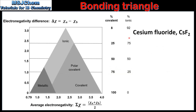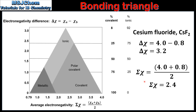The next example is Cesium Fluoride. The difference in Electronegativity between Cesium and Fluorine is 3.2, and the average Electronegativity is 2.4. Plotting 3.2 on the Y axis and 2.4 on the X axis puts us firmly in the Ionic region of the Bonding Triangle. The bonding in Cesium Fluoride is Ionic, with a low percentage Covalent Character and a high percentage Ionic Character.